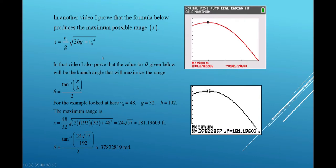In another video, I actually proved that the maximum possible range is going to be given by this formula: the initial speed divided by the gravitational constant times the square root of two times the initial height times the gravitational constant plus the initial speed squared.